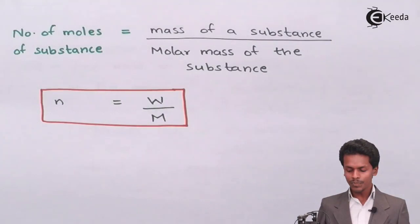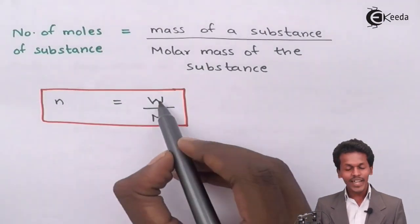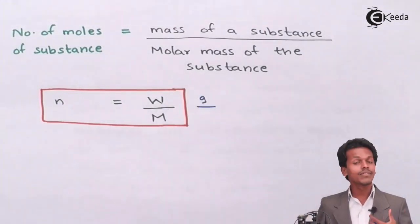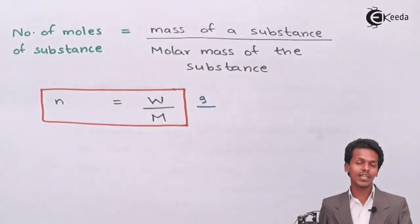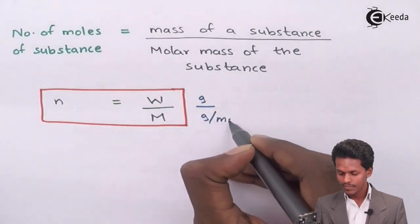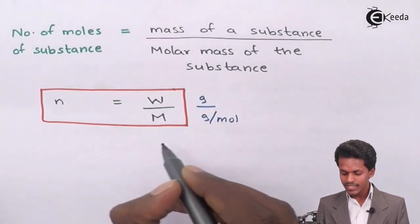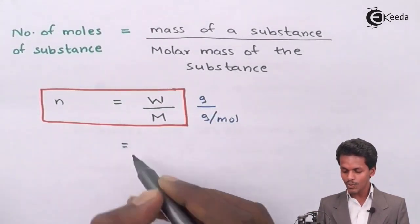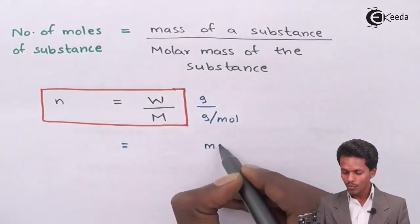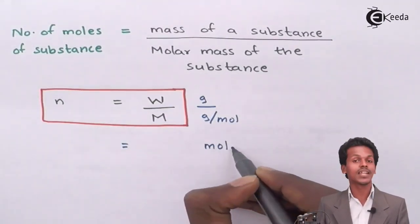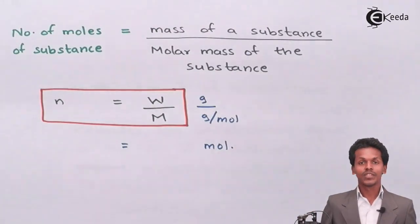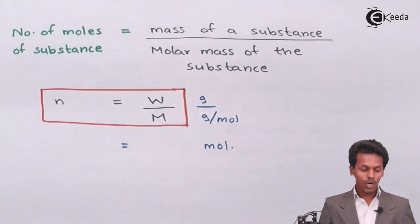The weight has a unit of grams, while the molar mass has the unit of gram per mole. Therefore, the number of moles has a unit of mole — or you could say it has no unit, as it is dimensionless.